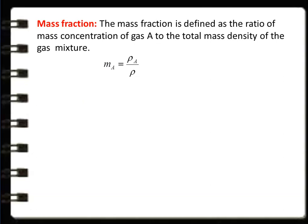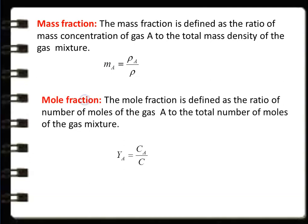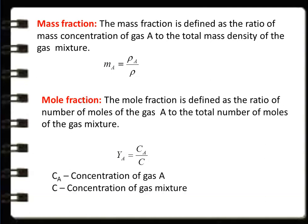Mass fraction of gas A is defined as the ratio of mass concentration of gas A to the total mass density of the gaseous mixture: mass fraction = ρA / ρ. Mole fraction of gas A is defined as the ratio of number of moles of gas A to the total number of moles of the gaseous mixture: YA = CA / C, where CA is the concentration of A and C is the concentration of the gas mixture.